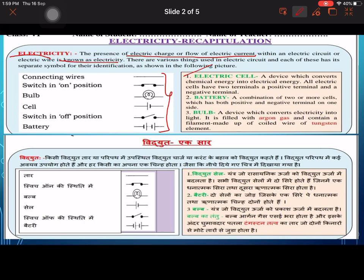Electric cell is a device which converts chemical energy into electrical energy. Battery is a combination of two or more cells. A bulb converts electrical energy into light energy, filled with argon gas and the filament made up of tungsten.